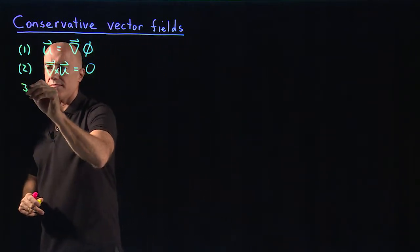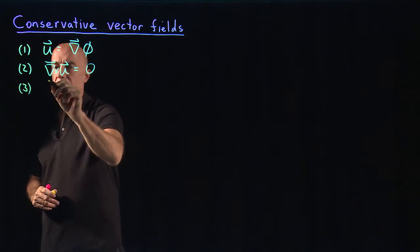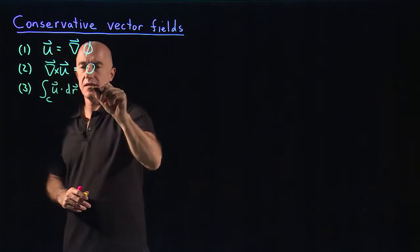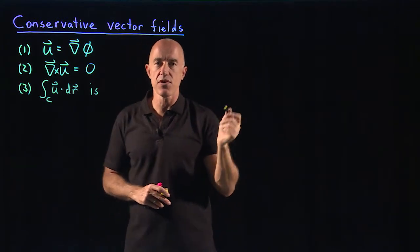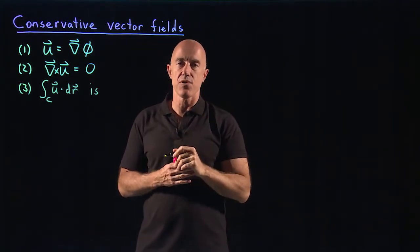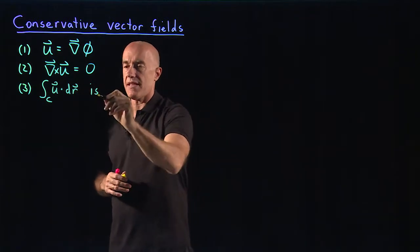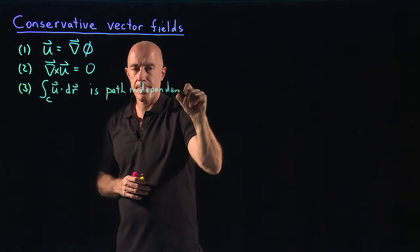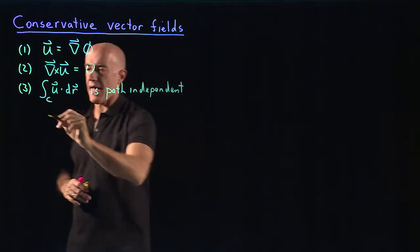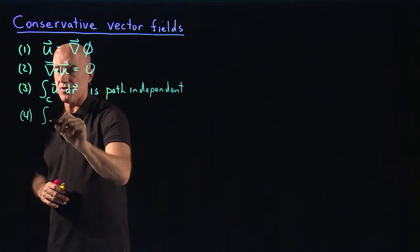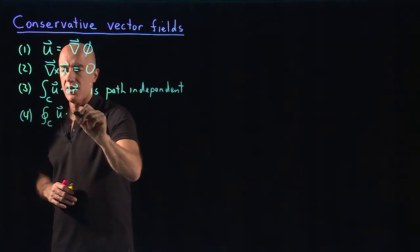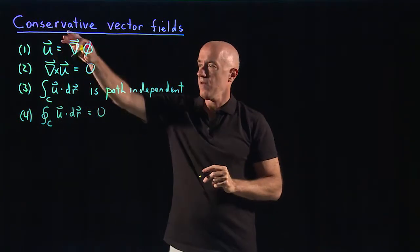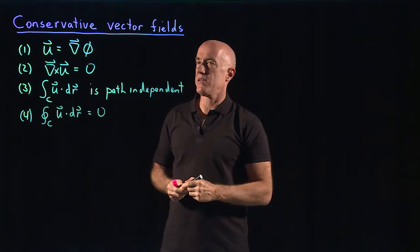The third condition, which is equivalent to these first two, is that the integral of u dot dr along a curve C doesn't matter how you draw the curve C, as long as you have the same starting point and the same ending point. We say that this is path independent. Another way of saying path independence is simply that the integral around a closed curve of u dot dr is going to be zero.